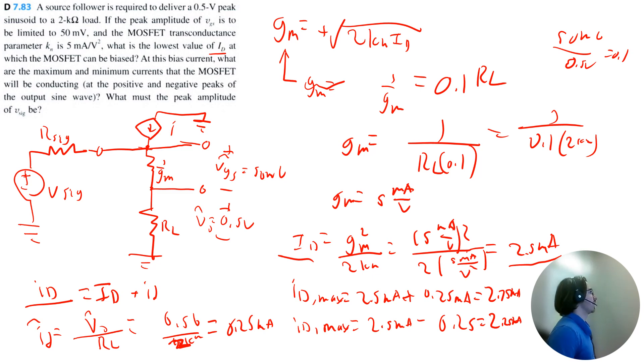And then what must the peak amplitude of Vsig be? We can leverage the following equation. It's just equal to the amplitude of the voltage from gate to source, plus the output voltage. So that's 50 millivolts, or 0.05 volts, plus 0.5 volts, and that's equal to 0.55 volts for Vsig. And that solves the problem.